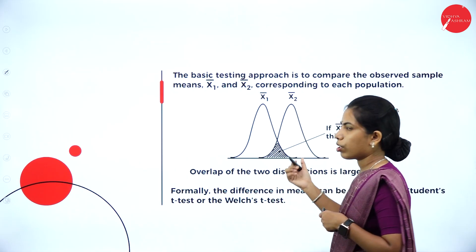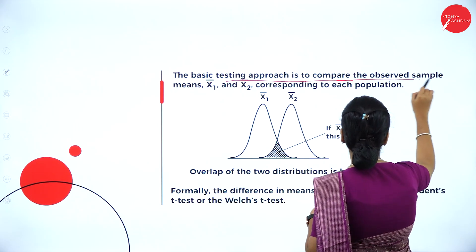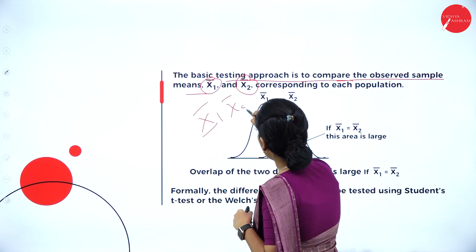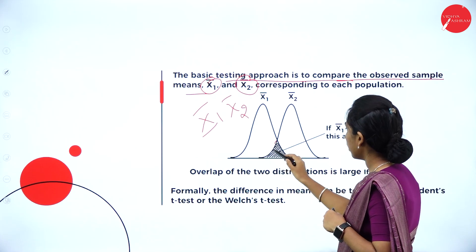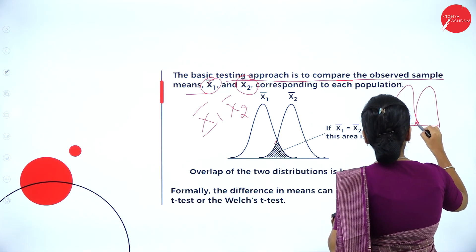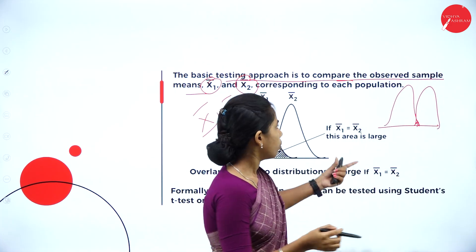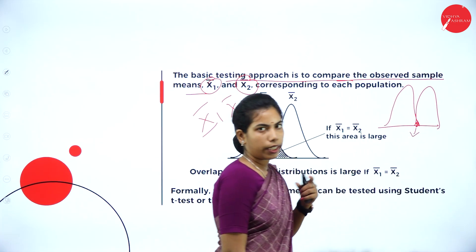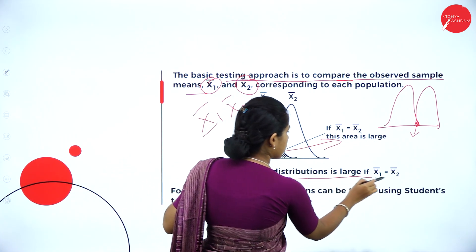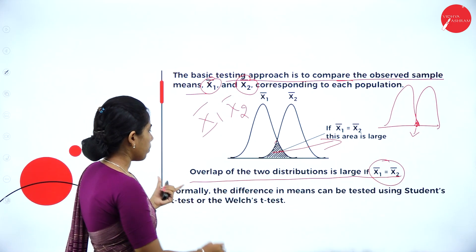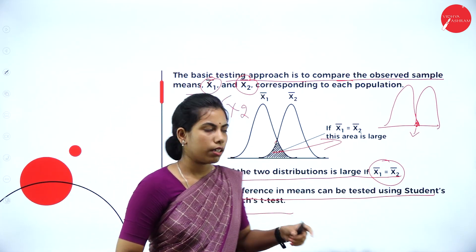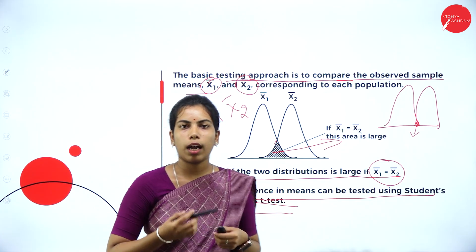Here you can see how two sample means overlap. The basic testing approach compares the observed sample means x1 and x2. The two samples are distributed, but here the means are distributed equally. In between the two intersections we get only a small number of means — the overlap area is large when x1 equals x2. Formally, the difference of means can be tested using the T-test or Welch's test.